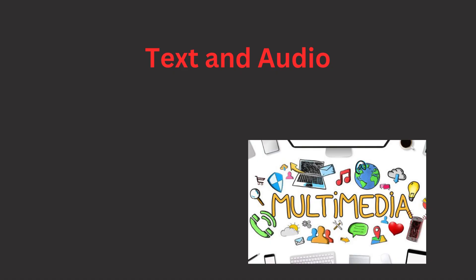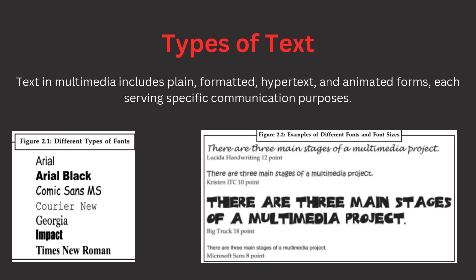So first, the types of text. Text in multimedia comes in various forms: plain text, formatted text, hypertext, and animated text. Plain text is the simplest form, consisting of characters without any formatting. Formatted text includes styles like bold, italic, and colors to make it visually appealing.